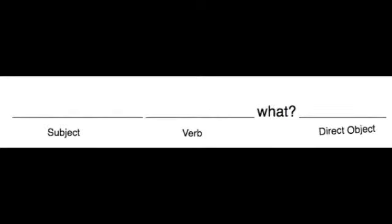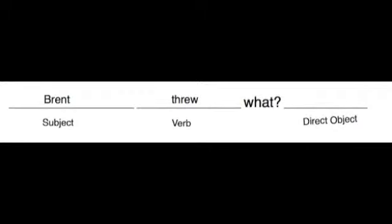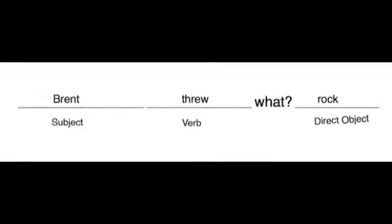So let's try it again: 'Brent threw a rock.' We need to find the subject and the verb again, which is Brent and threw, and ask 'what?' What did he throw? Brent threw the rock. That's our direct object.